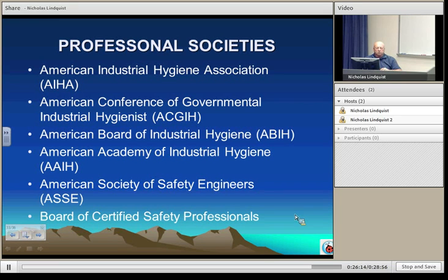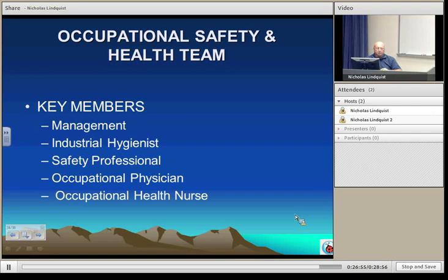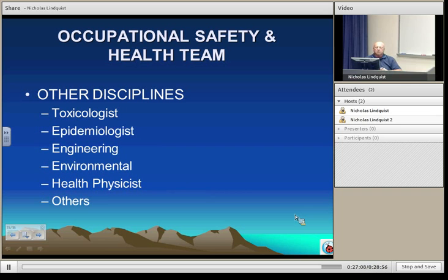When we look at an occupational safety and health team and the types of people involved, management is a key member. We have industrial hygienists, safety professionals, and occupational physicians — for extremely large companies they may be on staff, while more common-sized companies utilize an occupational physician clinic and service. You can have occupational health nurses, and other disciplines such as toxicologists, epidemiologists, engineering personnel, environmental professionals, and health physicists.